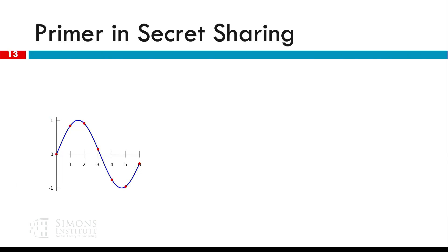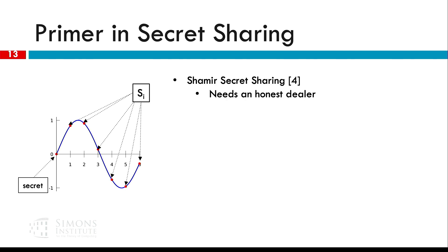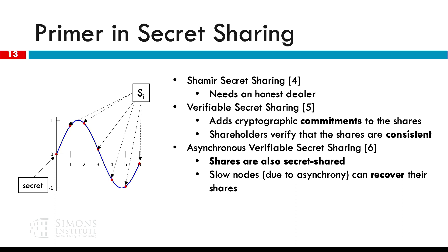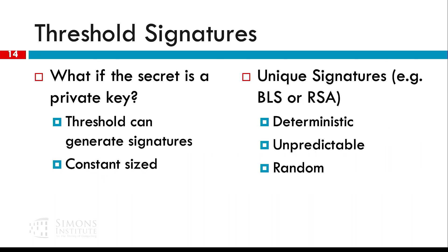Everyone knows secret sharing — it works on polynomials. There is Shamir secret sharing, the first secret sharing protocol, and it needs an honest dealer. Then we have verifiable secret sharing, where the idea is that we use cryptographic commitments on the polynomial so parties can verify they are on a consistent polynomial and don't get random shares. Then there is asynchronous verifiable secret sharing, built to work in a fully asynchronous network — the idea is that we secret share the secret shares so that parties that were slow can come later and collect their shares from the rest of the network.